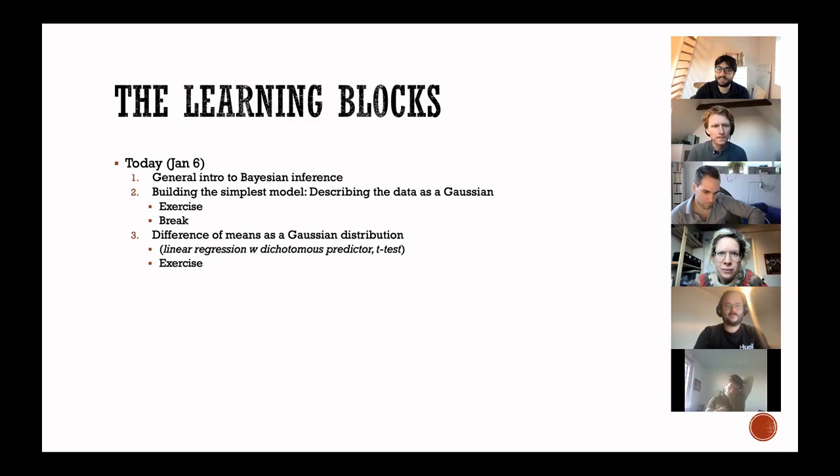In the second part of today we're gonna model difference of means as a Gaussian distribution, which is very analogous to what people would usually call a linear regression with dichotomous predictor or a t-test. But in this Bayesian framework you don't need to worry about which kind of test you're running. You're just telling the computer what you know about the data and the question you're asking. You don't need to know whether it's a t-test, a repeated measure ANOVA, a Wilcoxon, and so on. Then we'll do an exercise.